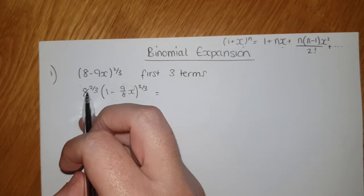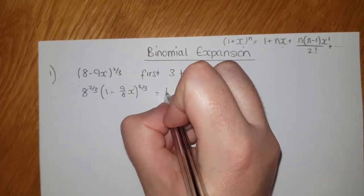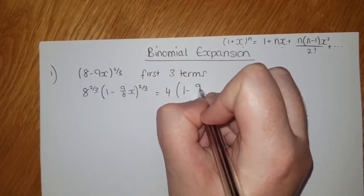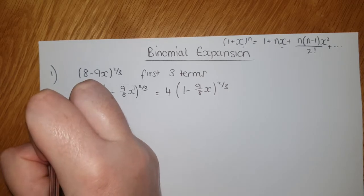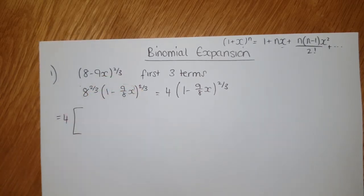Okay, so if I tidy up the number outside, the cube root of 8 is 2, 2 squared is 4. So it actually means I'm doing that term. So we're going to leave the 4 outside and using square brackets, if we expand the rest of it...